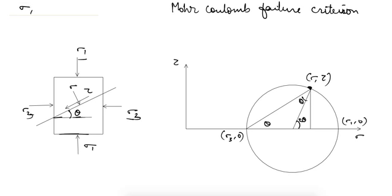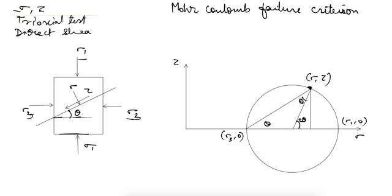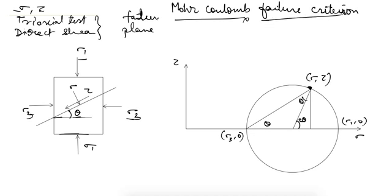To find out the normal and shear stresses at failure, the triaxial test is mainly conducted. Using this test we can find out the stresses at failure. Apart from this, the direct shear test can also be used. To find out the failure plane, we use the Mohr-Coulomb failure criterion.